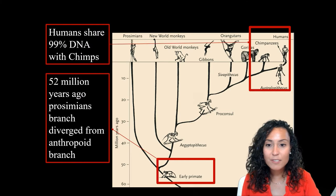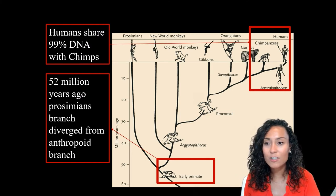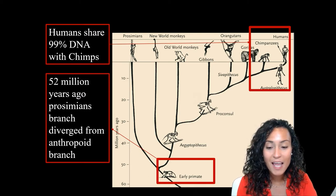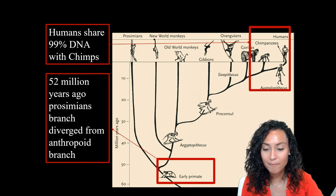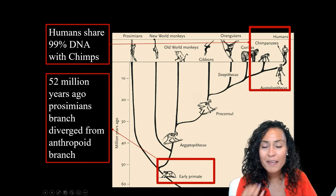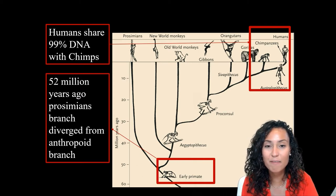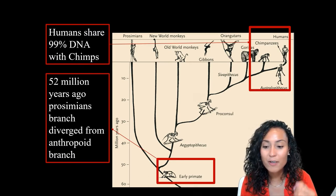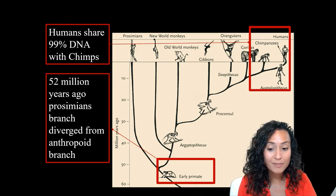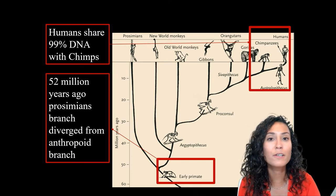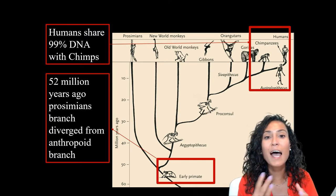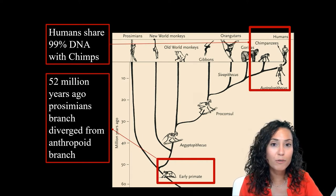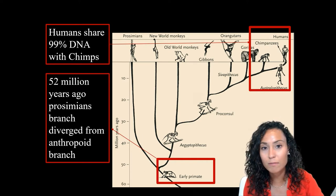As a result, our ancestors share more DNA in common with chimpanzees than with any other primate. The real impact of Darwin's theory of branching evolution was that modern humans are descended from animals, not a primordial ancestral Adam and Eve human ancestor in the way that many biblical theories of human evolution propose.